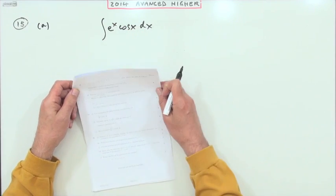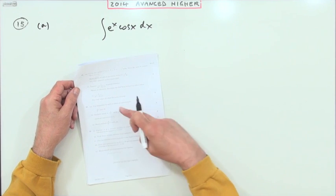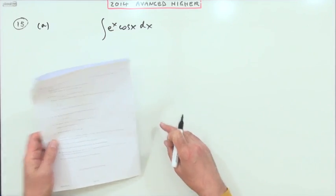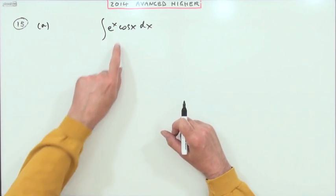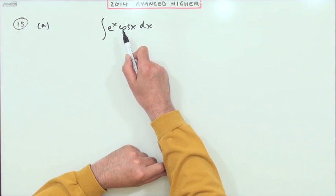Number 15 from the 2014 Advanced Higher paper: integration by parts all the way through by the looks of it. 10 marks here. First part, use integration by parts to find the value of that integral. Now normally when you're doing integration by parts, you look for one of them that will whittle away when it's getting differentiated.